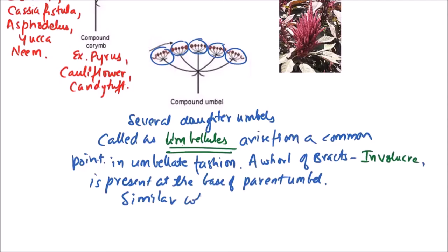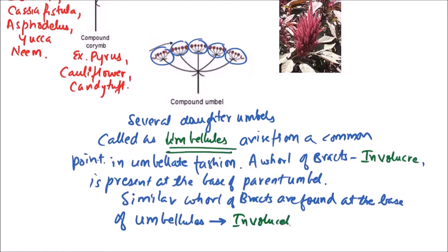Similar whorl of bracts are found at the base of umbellules, and this is termed as involucel. Each unit of umbel, that is the daughter unit, is termed as umbellule. Several umbellules are arranged in umbel or umbellate manner.